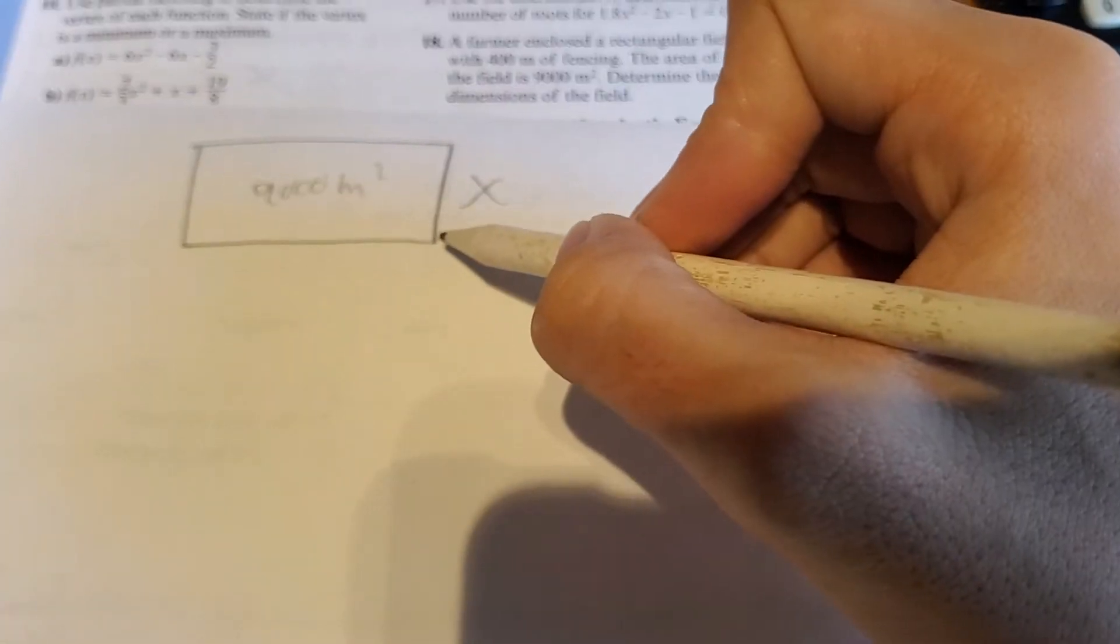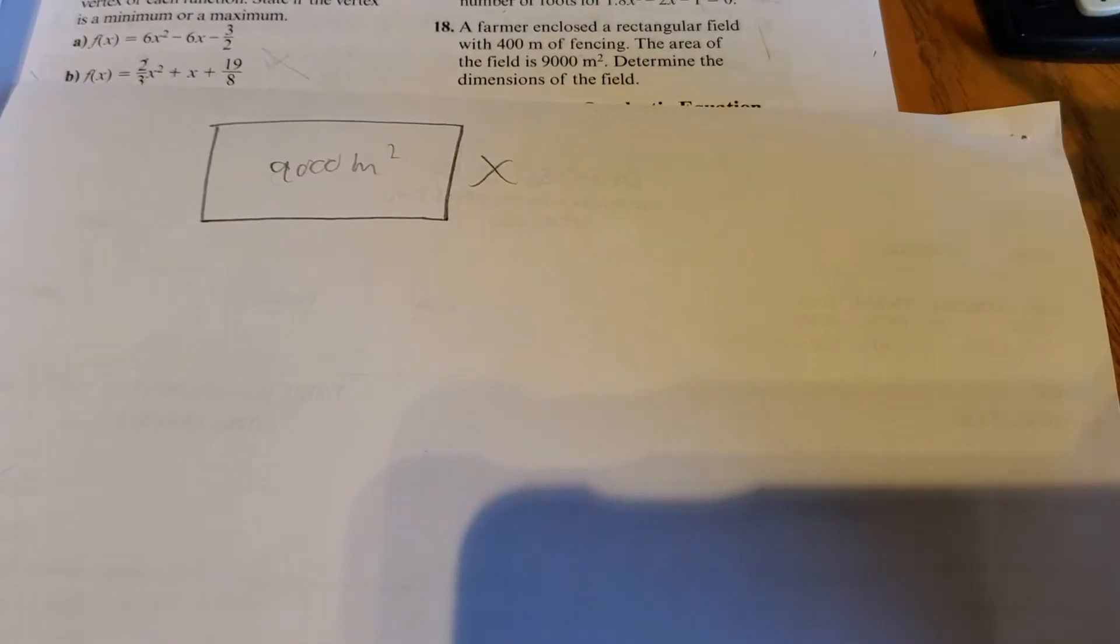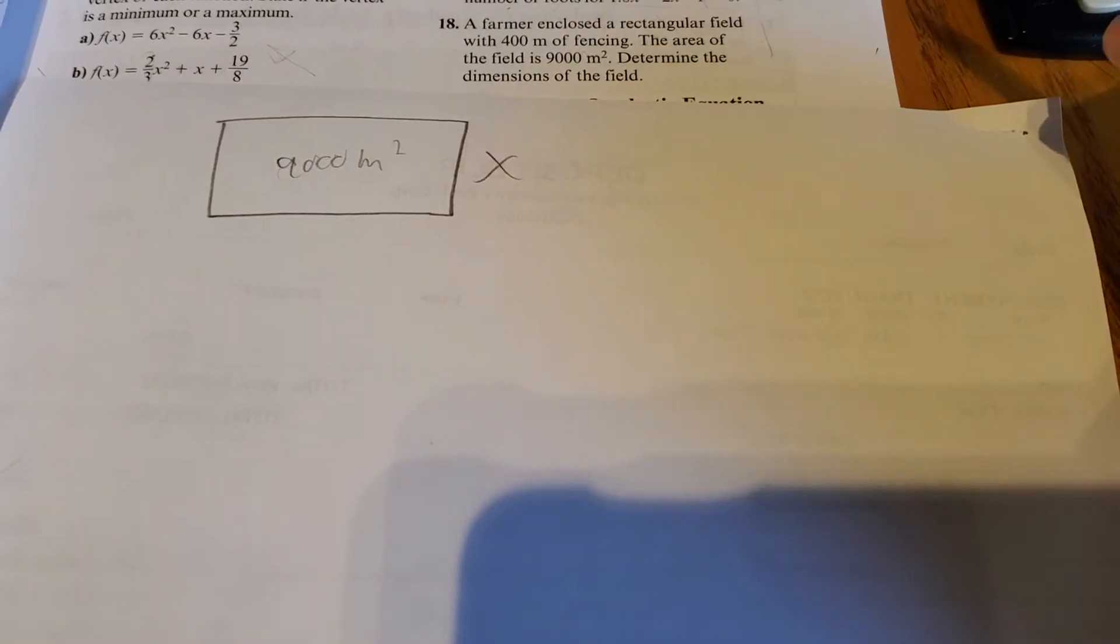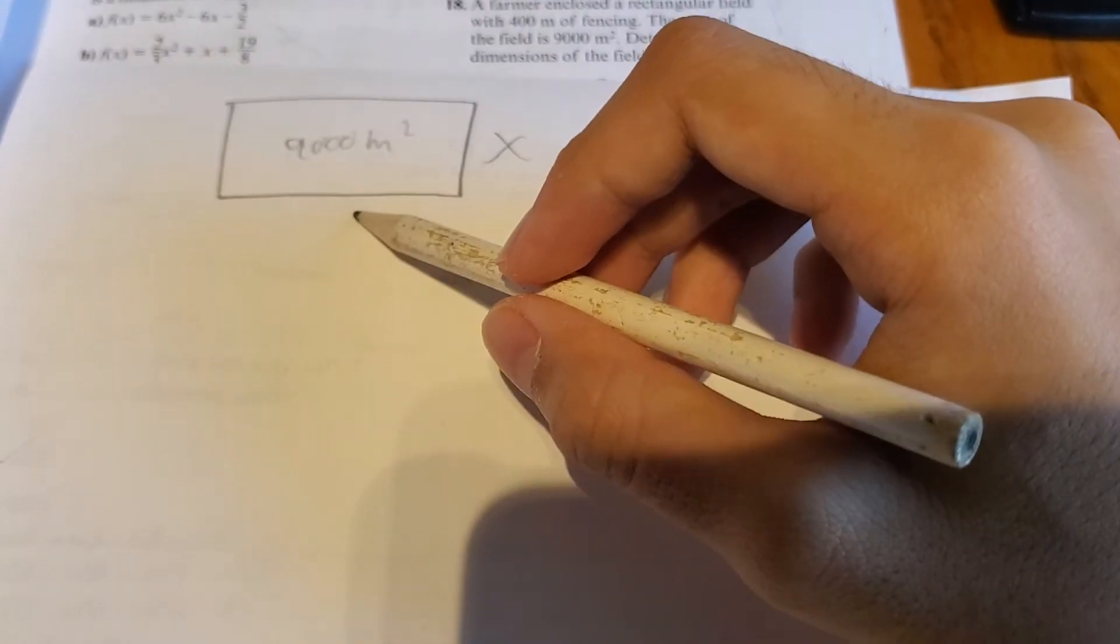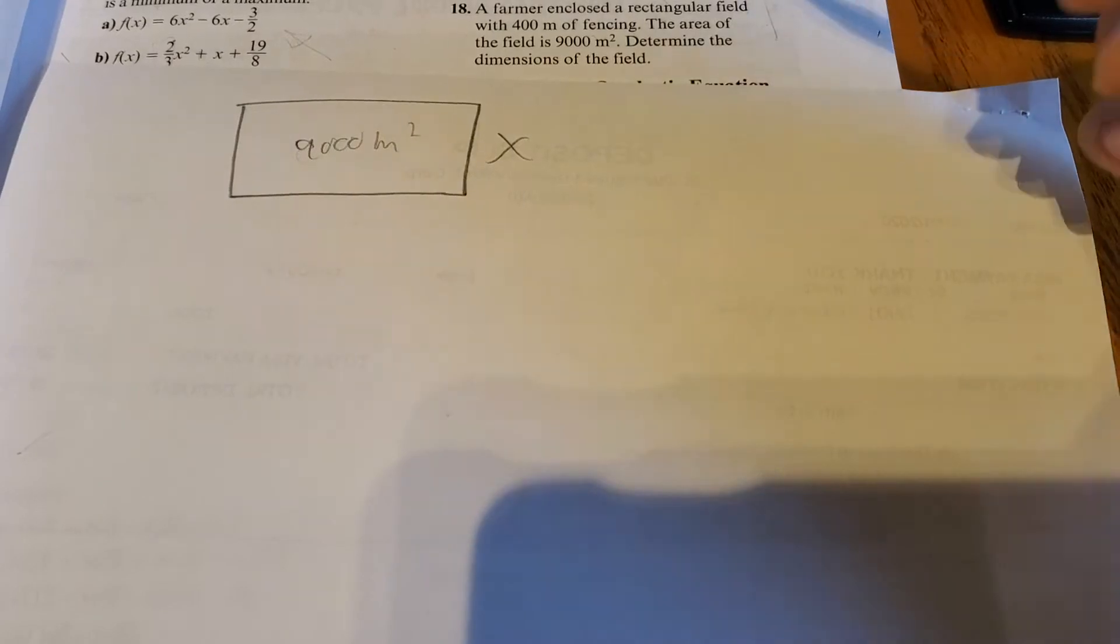So these two sides add up together to half of the perimeter, which is 200 meters of fencing. So this side, what would it be? It would be 200 minus x.